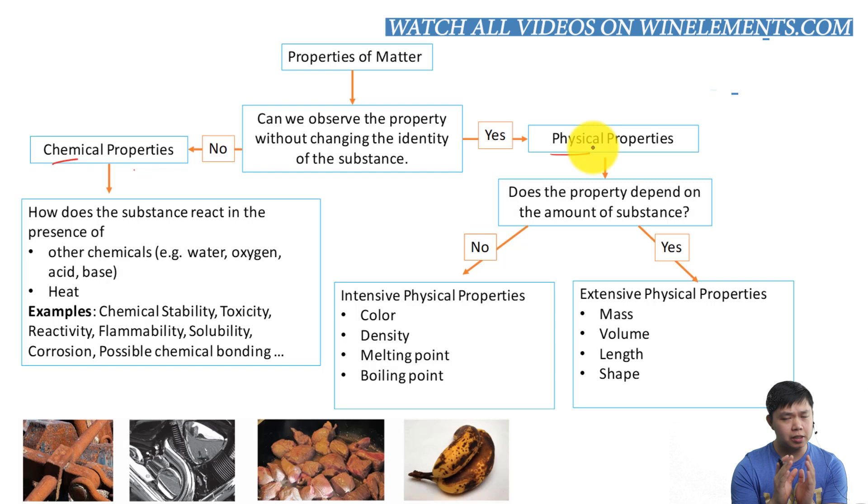The key difference is this. When we look at properties of matter, we have to ask this question: Can we observe the properties without changing the identity of the substance? If the answer is yes, more likely that property is physical properties. Because we observe physical properties all the time without endangering our life. That's the key difference, because some chemical properties are very harmful to us.